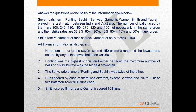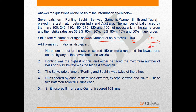The number of balls faced by them are given, not necessarily in the same order, and their strike rates are also given, not necessarily in the same order. The strike rate equals the number of runs scored divided by number of balls faced, multiplied by 100. For example, if someone scores 100 runs after facing 80 deliveries, the strike rate is 100/80 × 100 = 125.